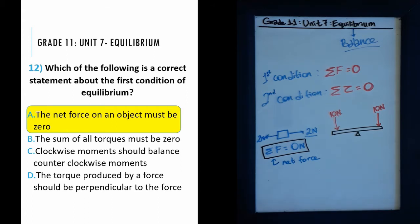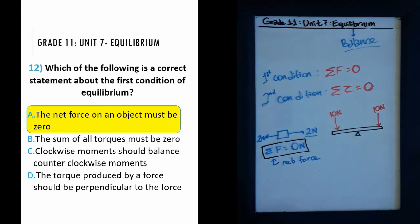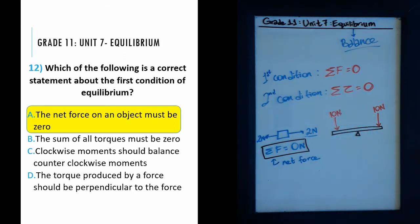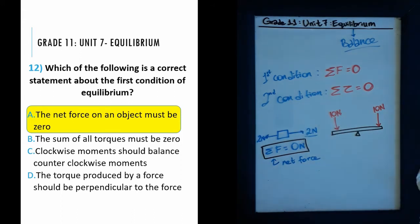Choice C says clockwise moments should balance counterclockwise moments — 'moments' is another word for torque. That is also true and relates to the second condition. Choice D says the torque produced by a force should be perpendicular to the force — also true. By the right-hand rule, since torque is the radius cross product of force, torque is perpendicular to both the radius and force. But these have nothing to do with the first condition of equilibrium.